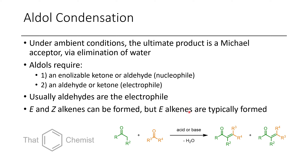When we look at our condensation products, there are two different types we could form: the E or the Z alkene. Because the R groups are ambiguous, I haven't labeled them, just to show that different products could potentially form. However, most of the time we form the entgegen alkenes — meaning opposite — because the bulky groups will try to oppose each other for steric bulk reasons.